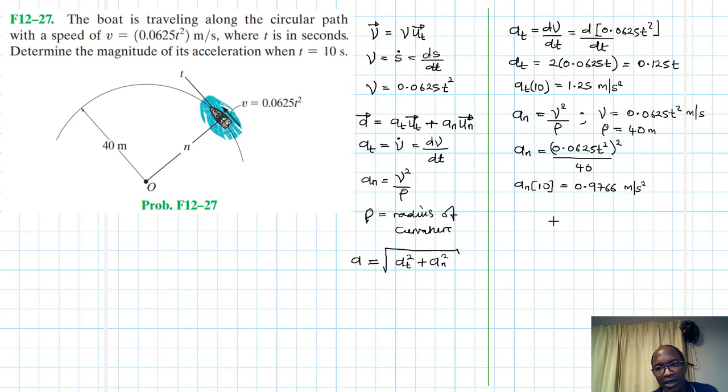So we have these values, therefore, the magnitude is equal to at squared plus an squared. So if we are to plug in these values, this one here and this one here, we square them using Pythagoras theorem. I'll write it the way it has come out on my calculator. 0.9765625 squared. So I'll say squared of that, squared of that plus 1.25 squared also, and square root of that.